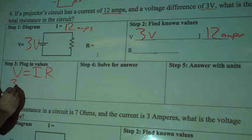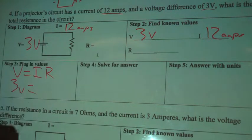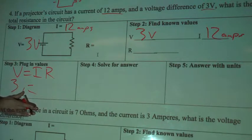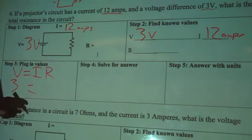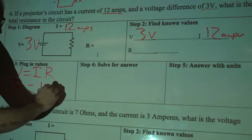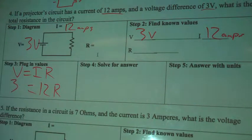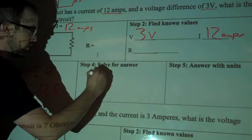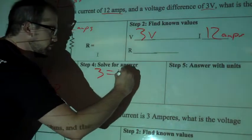My voltage was 3 volts equals, and I'm not going to put these units in here. It's not going to be important to us right now. So 3 equals my 12, and then R. Okay, solve for answer. Obviously, this is a little bit different than the ones where we're just solving for V. So I'll rewrite this. So 3 equals 12 R.